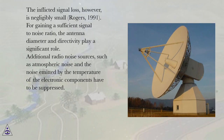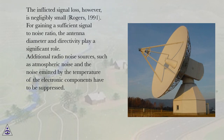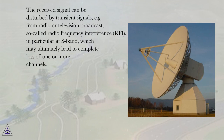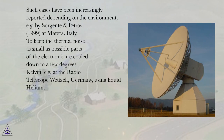For gaining a sufficient signal-to-noise ratio, the antenna diameter and directivity play a significant role. Additional radio noise sources, such as atmospheric noise and the noise emitted by the temperature of the electronic components, have to be suppressed. The received signal can be disturbed by transient signals, for example from radio or television broadcast — radio frequency interference (RFI) — in particular at S band, which may ultimately lead to complete loss of one or more channels. Such cases have been increasingly reported depending on the environment, for example by Sergente and Petrov (1999) at Matera, Italy.